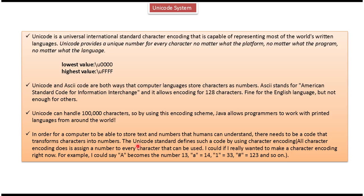In order for a computer to store text and numbers that humans can understand, there needs to be a code that transforms characters into numbers. The Unicode standard defines such a code by using character encoding, which assigns a number for each and every character.